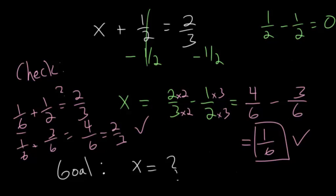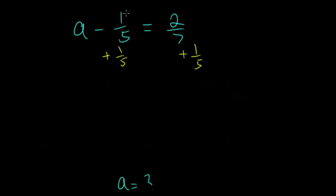Okay, moving on to another fraction problem. Let's say that we have a minus 1 fifth equals 2 sevenths. Alright, so we know our goal is to get a by itself. So we have to cancel out this minus 1 fifth. So we'll do the opposite, we will add 1 fifth to each side of this. And that way, minus 1 fifth plus 1 fifth will cancel each other out, and we'll just give us zero.